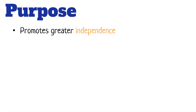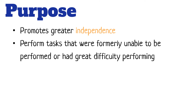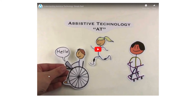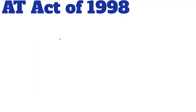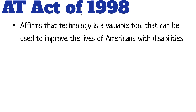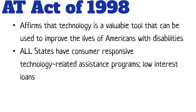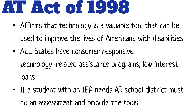The purposes of instructional assistive technology include independence, improving tasks, and increasing functionality. It all started with the Assistive Technology Act back in 1998, which affirmed that in the U.S., technology is a tool that can improve people with disabilities, and that all states should have programs available. A student with a disability has the legal right to have an IEP — an individual educational plan — that defines how assistive technology will be used to increase, maintain, or improve functional capabilities.